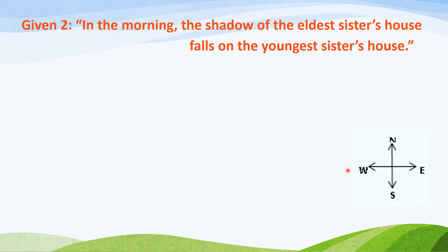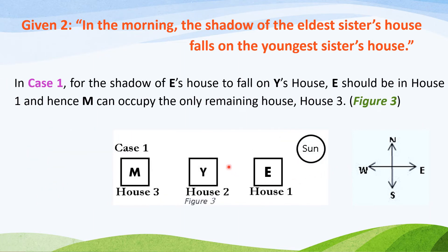Let us consider case 1 where Y occupies the middle house. Here, for the shadow of E's house to fall on Y's house, E should be in house 1. Therefore, M occupies the only remaining house, that is, house 3.